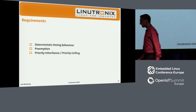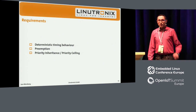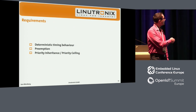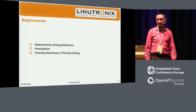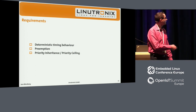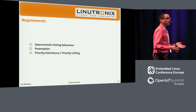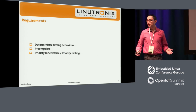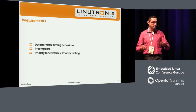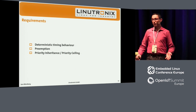When it comes to real-time operating systems, we need to check a couple of requirements. We need deterministic timing behavior, and to achieve that, one of the most important features an operating system needs is preemption. You need to be preemptible at most parts of the operating system, because a high-priority task always needs to be able to preempt a low-priority task.